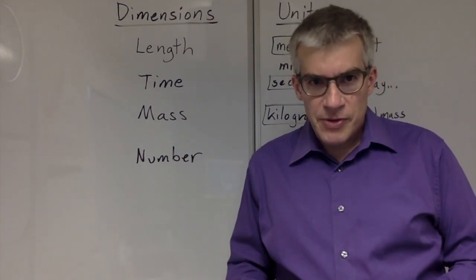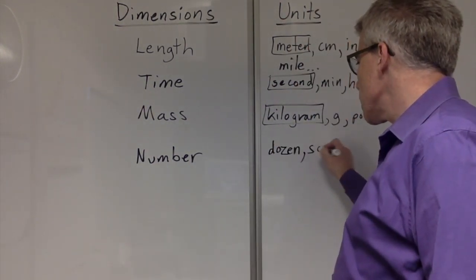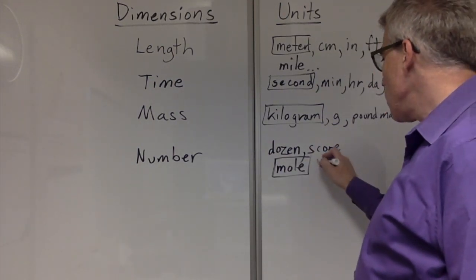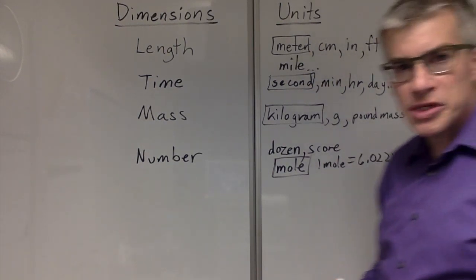But if you have lots of them, a great many of them, you might have a dozen, a score, or more realistically, a mole. And one mole happens to be 6.022 times 10 to the 23rd. You may know from chemistry class.